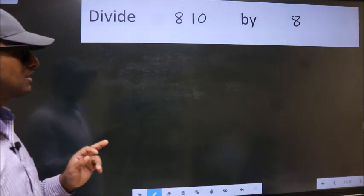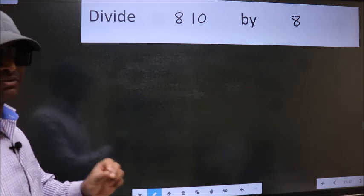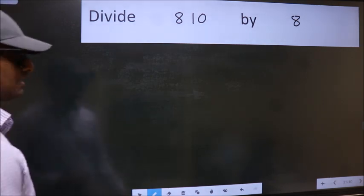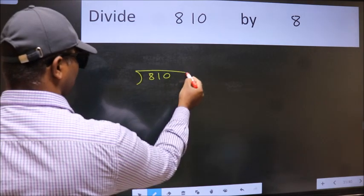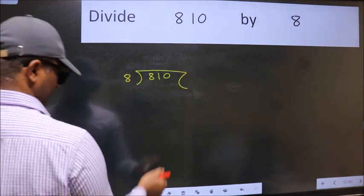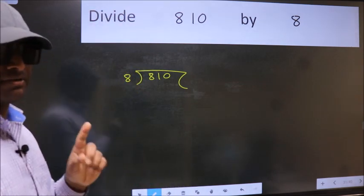Divide 810 by 8. To do this division, we should frame it in this way. 810 here, 8 here. This is your step 1.